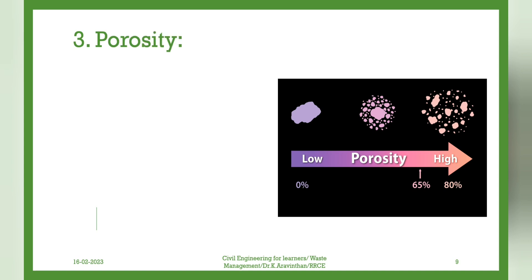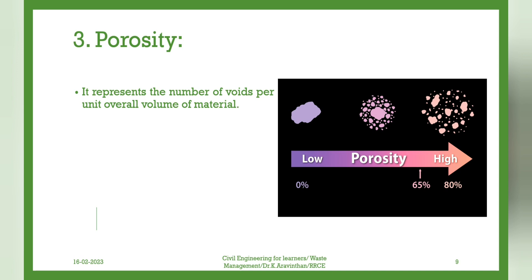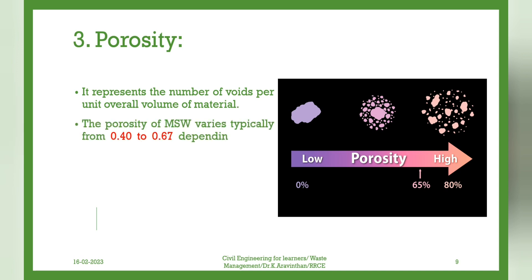Porosity. It represents the number of voids per unit overall volume of material. The porosity of MSW varies typically from 0.40 to 0.67, depending on the compaction and composition of the waste.